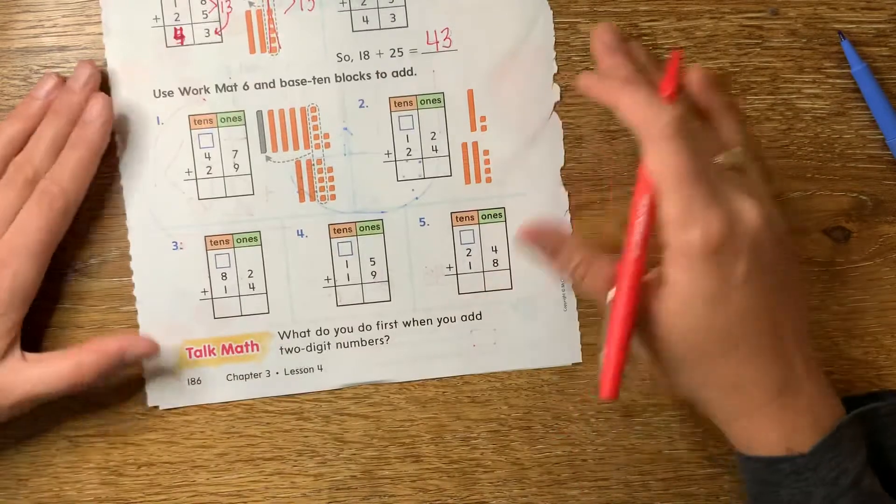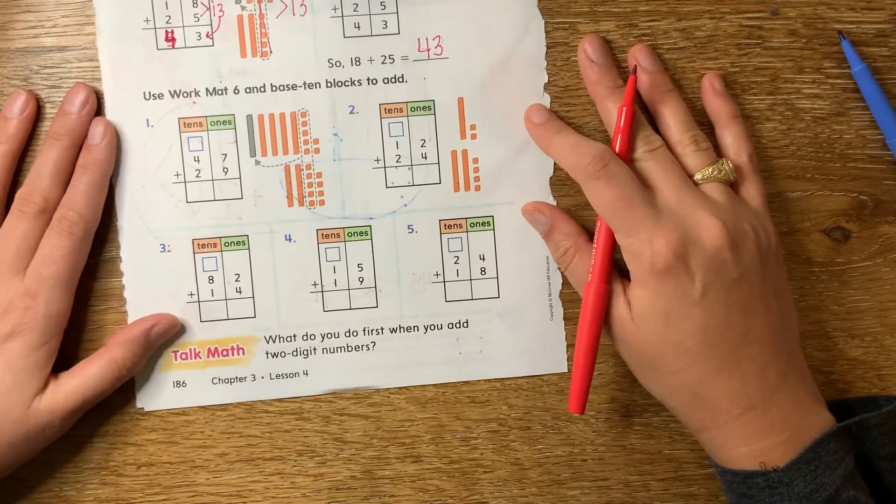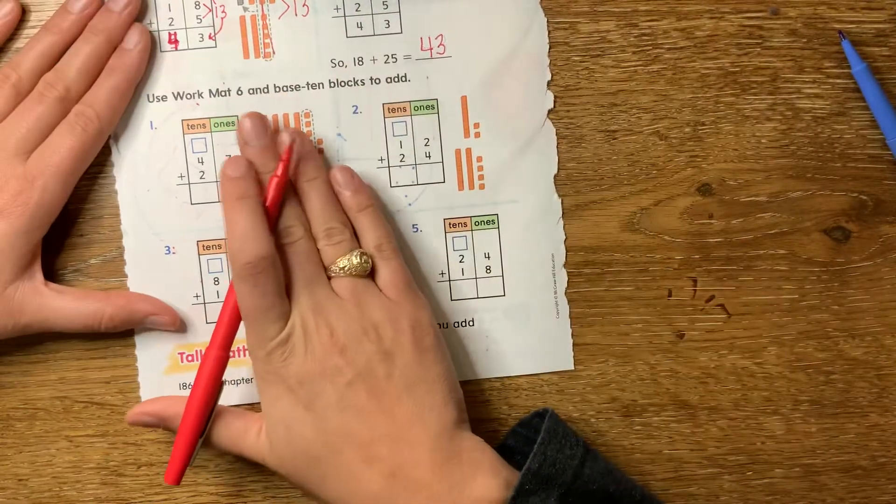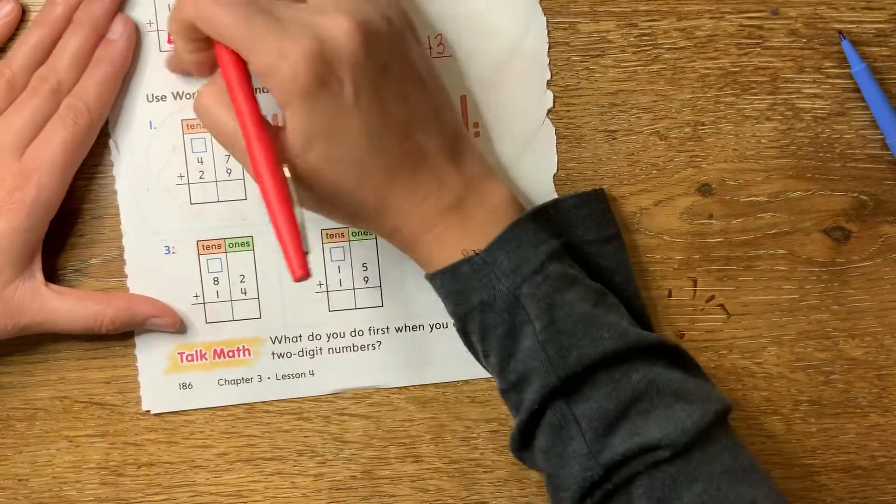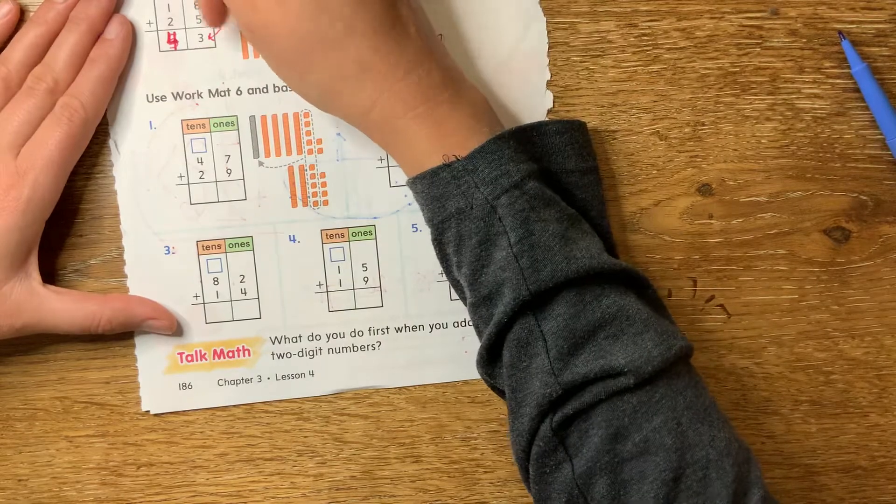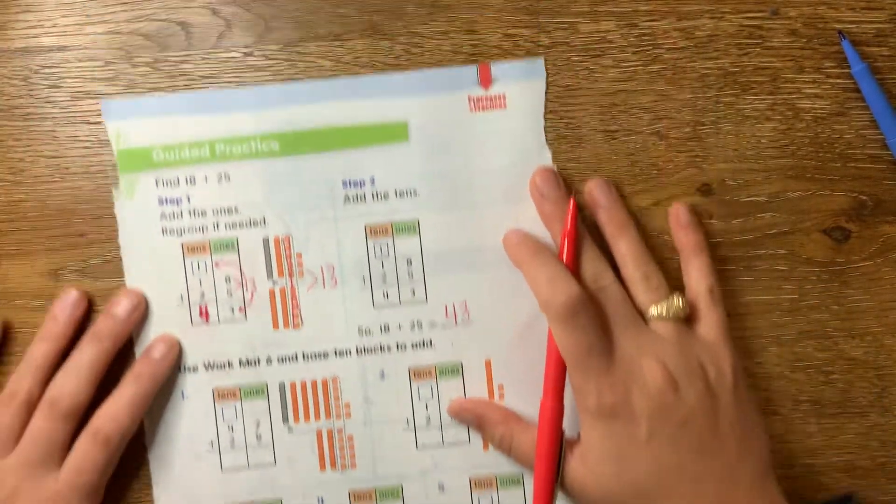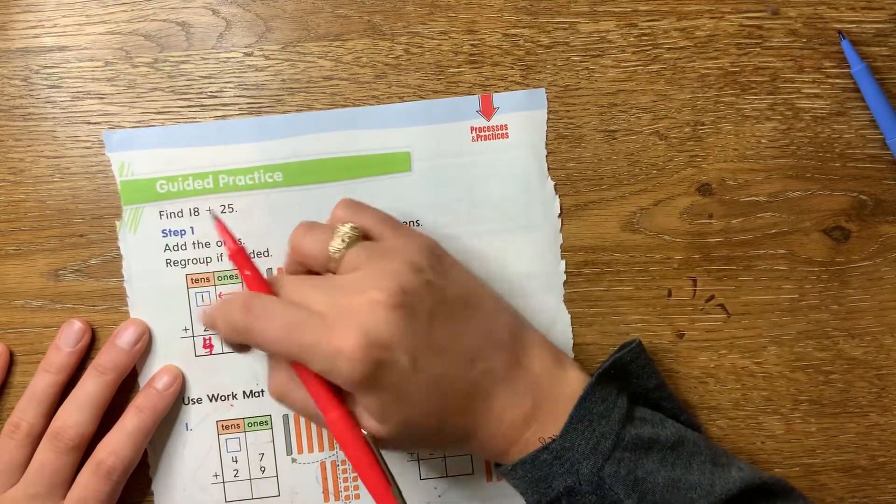All right, let's keep going. So I am going to, so we're just going to kind of, if this confuses you, just ignore it, okay? If you know how to do our method up here, where we take 10 ones and make a 10 and put the rest of the ones down here, you're good, okay?